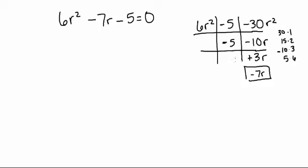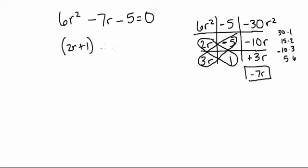I'll put negative 5 here and 2r here. That leaves a 3r in this box because 3r times 2r equals 6r squared, and a 1 here because negative 5 times 1 is negative 5 and 3r times 1 is 3r. It might take some practice to figure out which numbers go in which boxes, but just make sure they're factors of the corner terms and everything multiplies up and down and left to right. Now I circle the diagonal terms and my resulting factors are 2r plus 1 times 3r minus 5, and these equal 0.